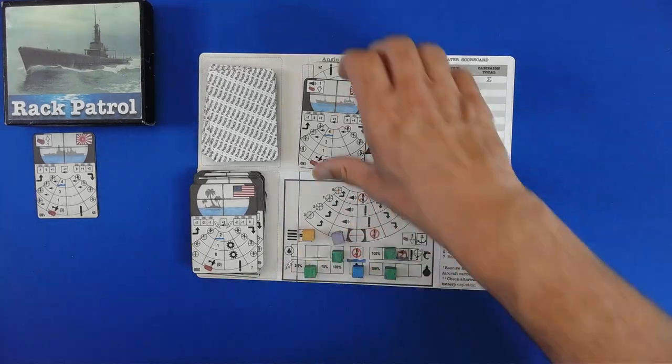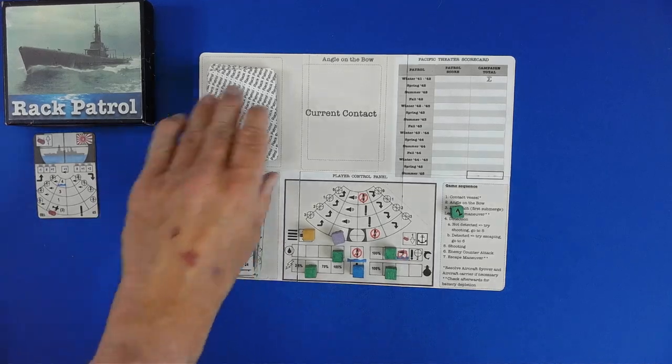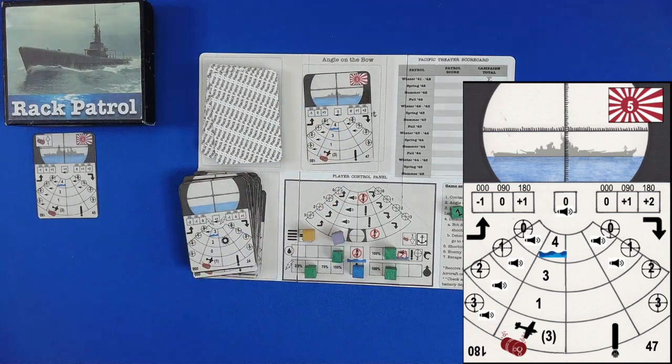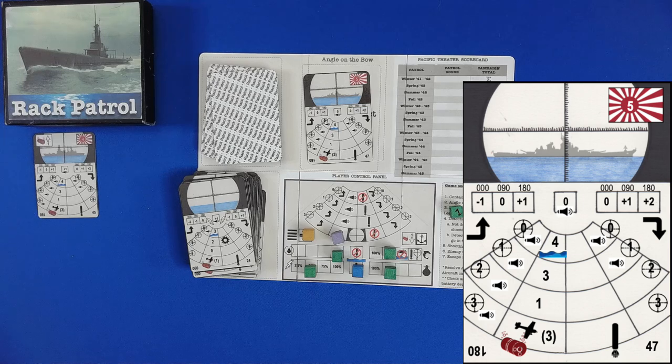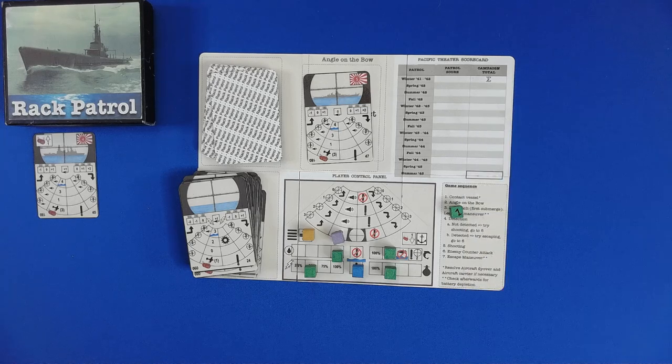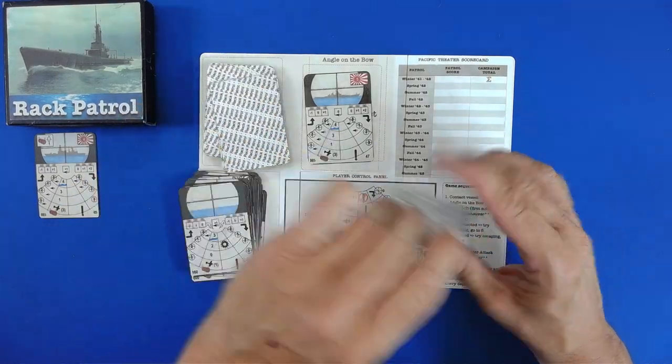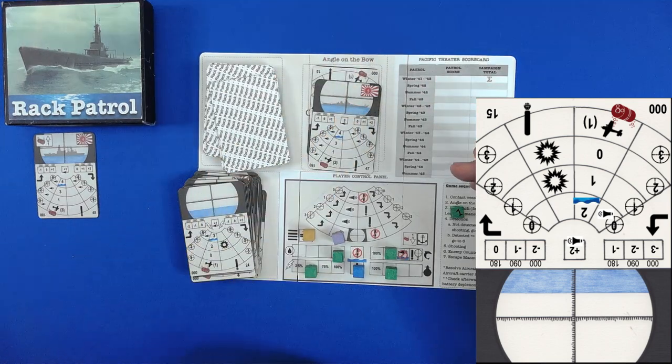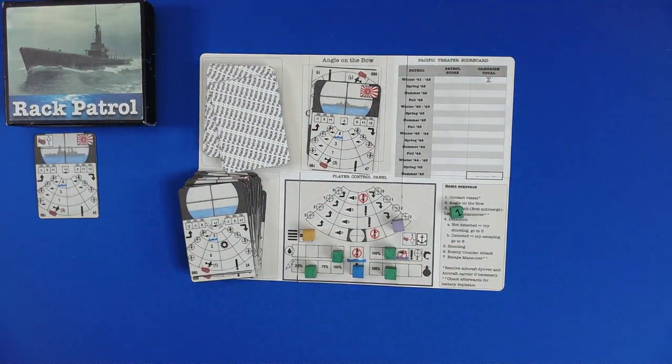So the good news is we have one kill so far. Wow. And we didn't have a chance to surface. Okay. So we have a little destroyer. Angle on the bow is zero, which means they are coming right towards us. And we definitely want to do a trailing action here.